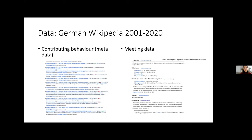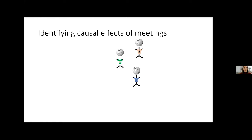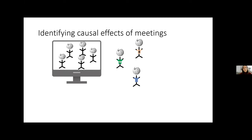My goal was to scrape all organizational meetup pages from the German Wikipedia in that timeframe — pages that include a list of attendees, a list of apologies, and recorded minutes. I ended up with over 4,400 meetings that took place in the timeframe; 99% were organized in the German-speaking area, but 1% took place globally across 20 different countries. My question for today is to identify the cause and effects of meetings: do attendees edit differently than a comparable group that did not attend meetups?